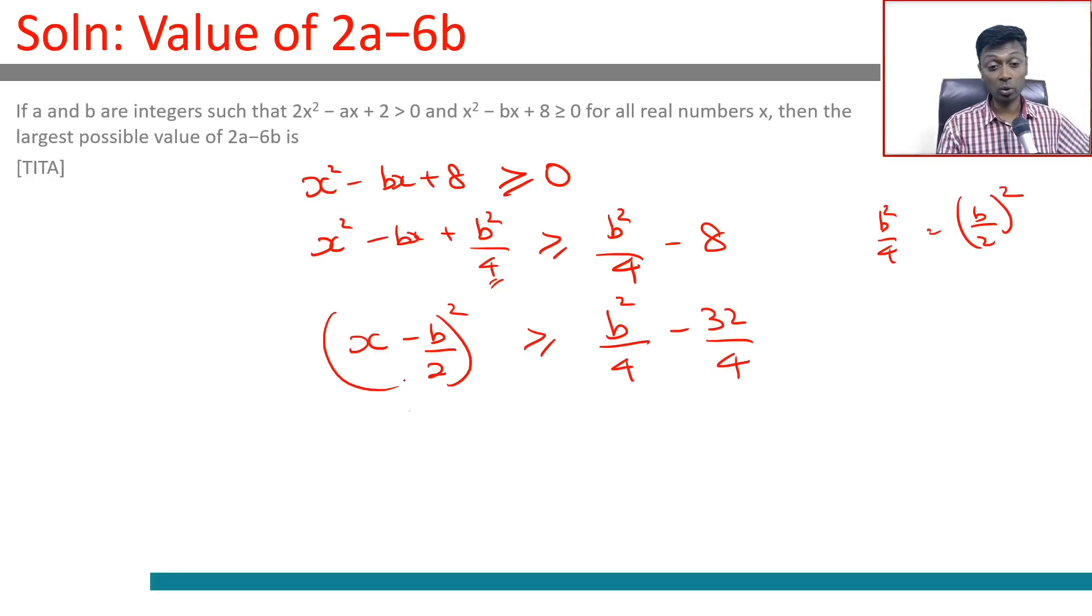Remember, this always holds good for all real values of x. That means b² should be less than or equal to 32. Here it is less than or equal to, but that doesn't matter because we're looking only at integers.